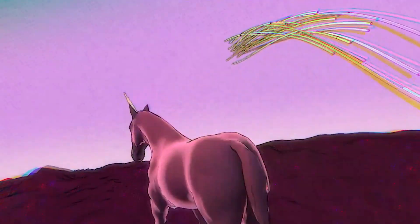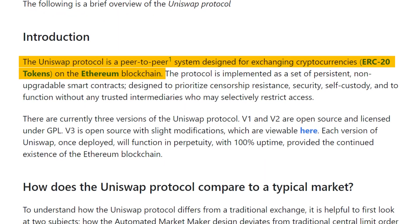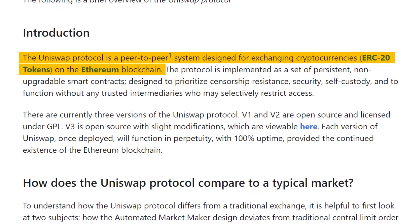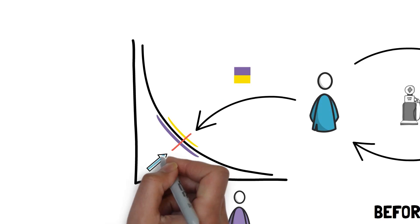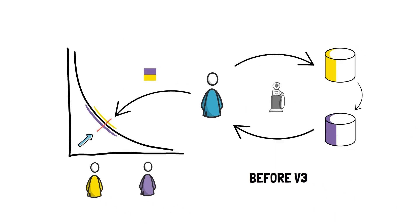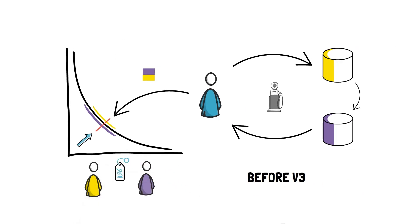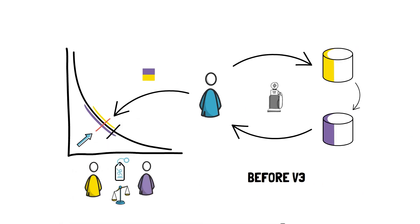So what exactly is Uniswap? This is a leading decentralized crypto exchange that runs on the Ethereum blockchain and is built on a relatively new trading model called an automated liquidity pool. We'll touch on this a little bit more later on.